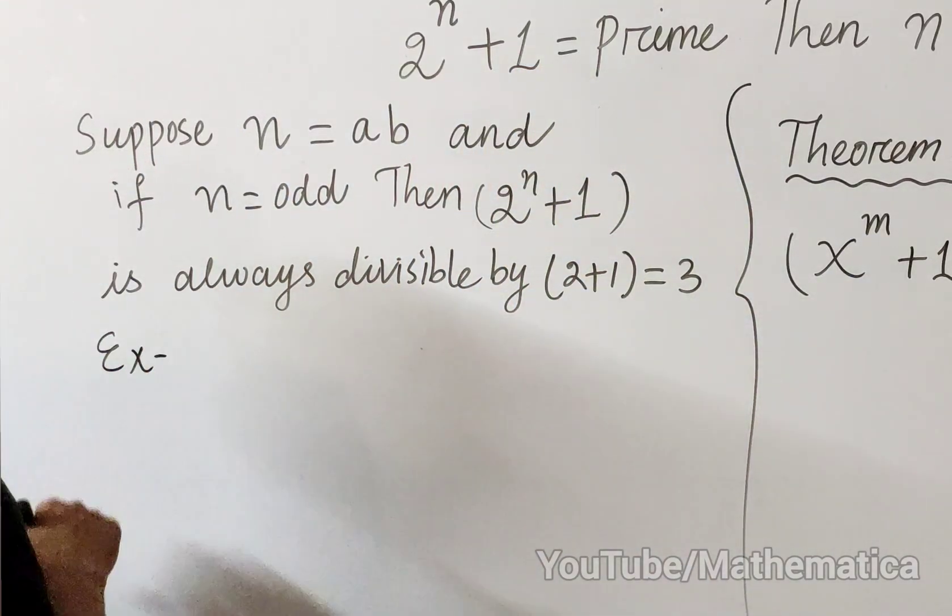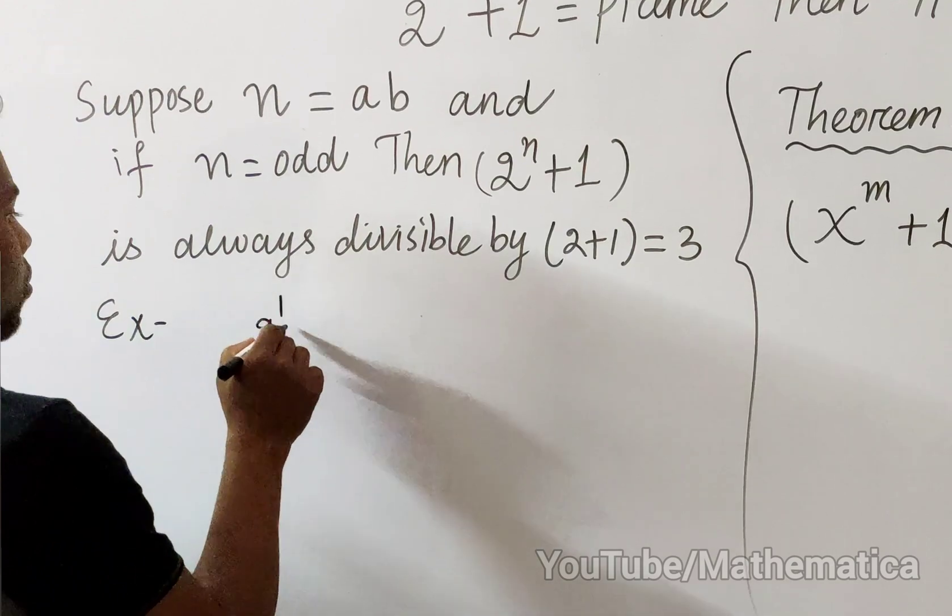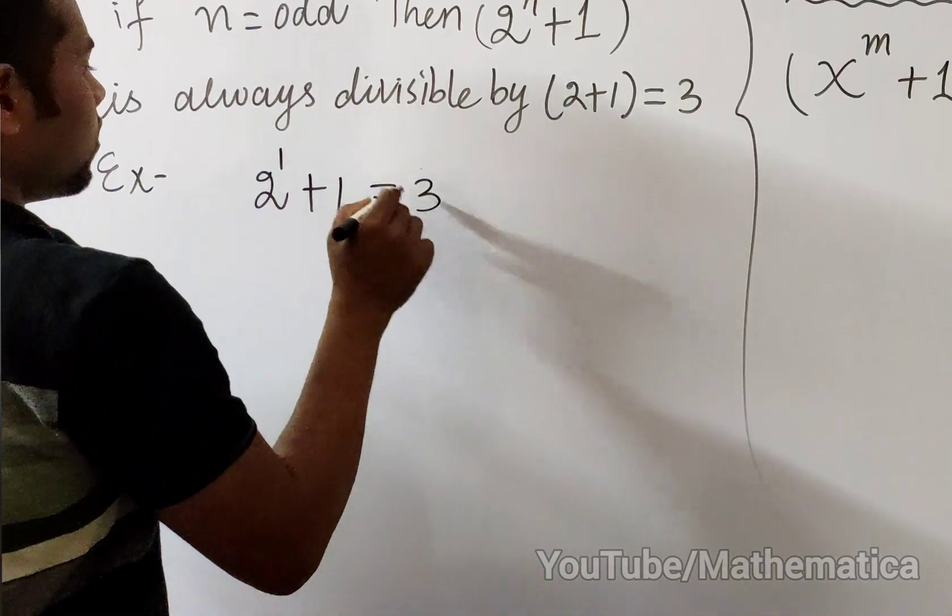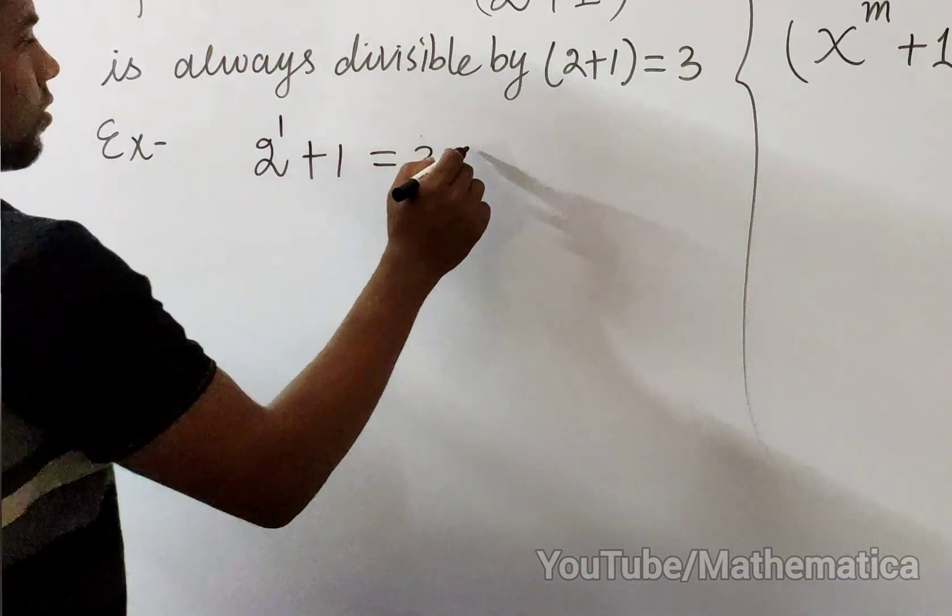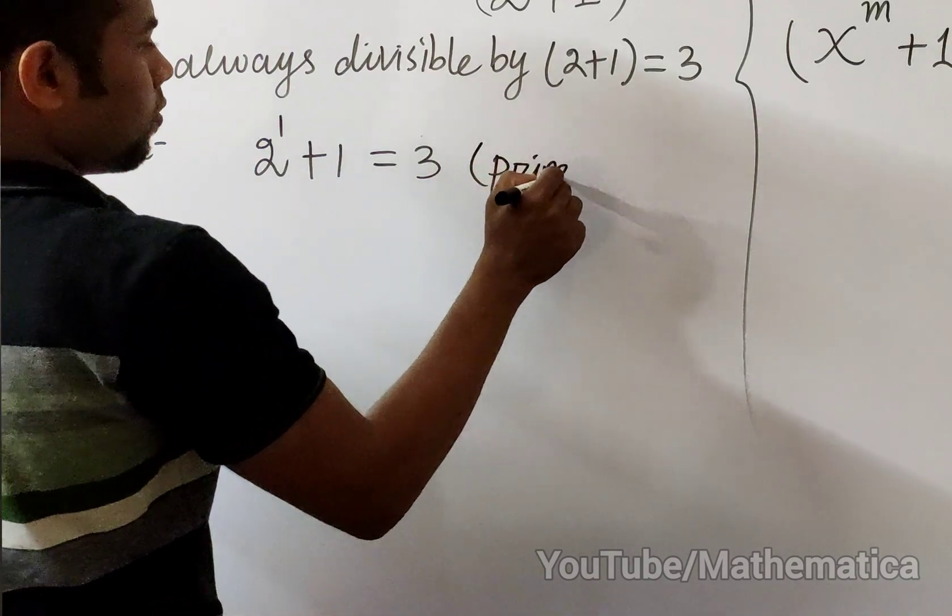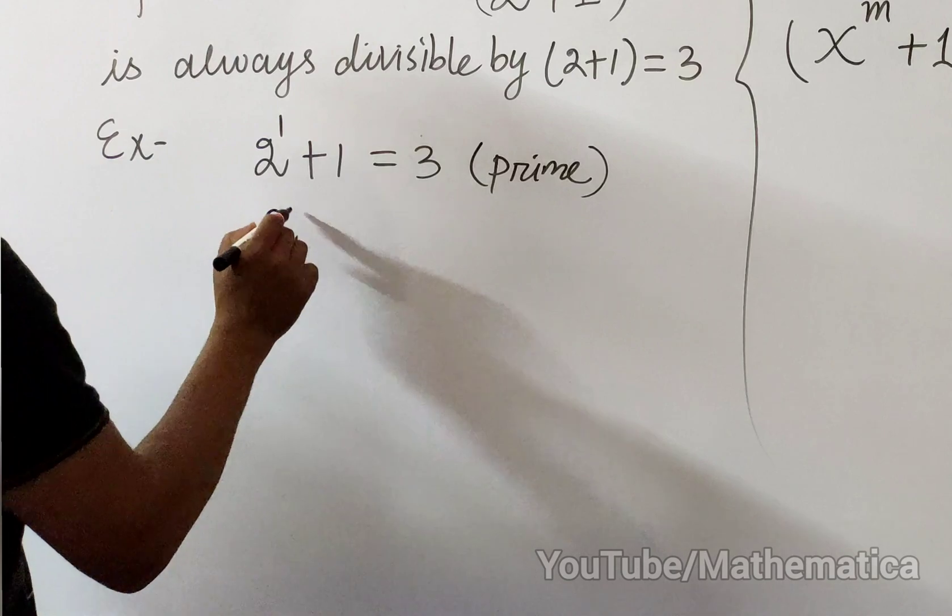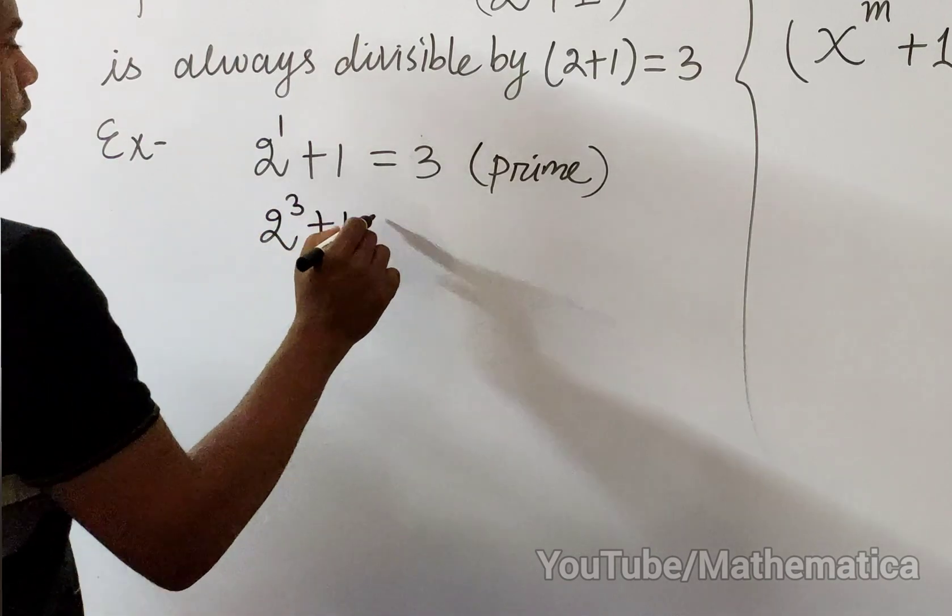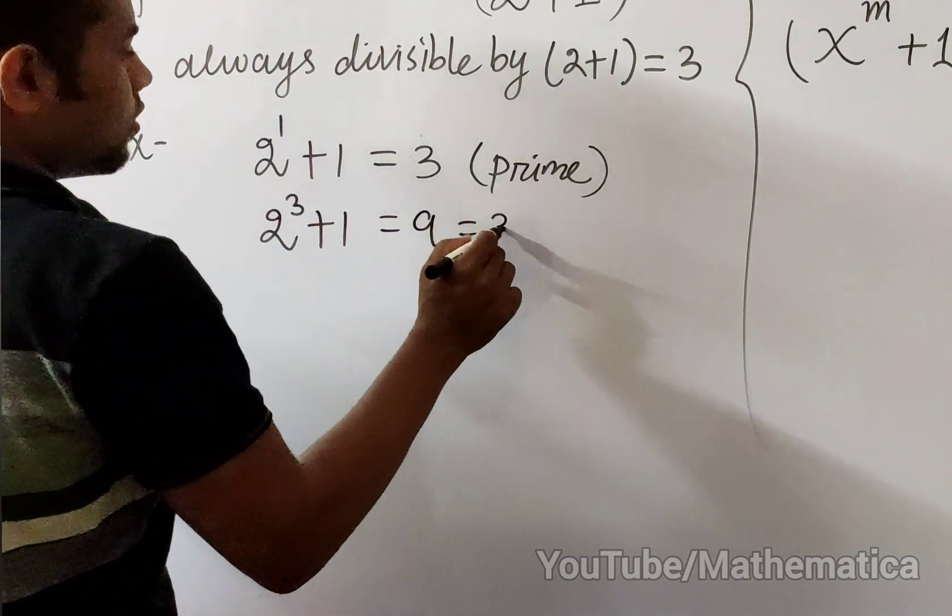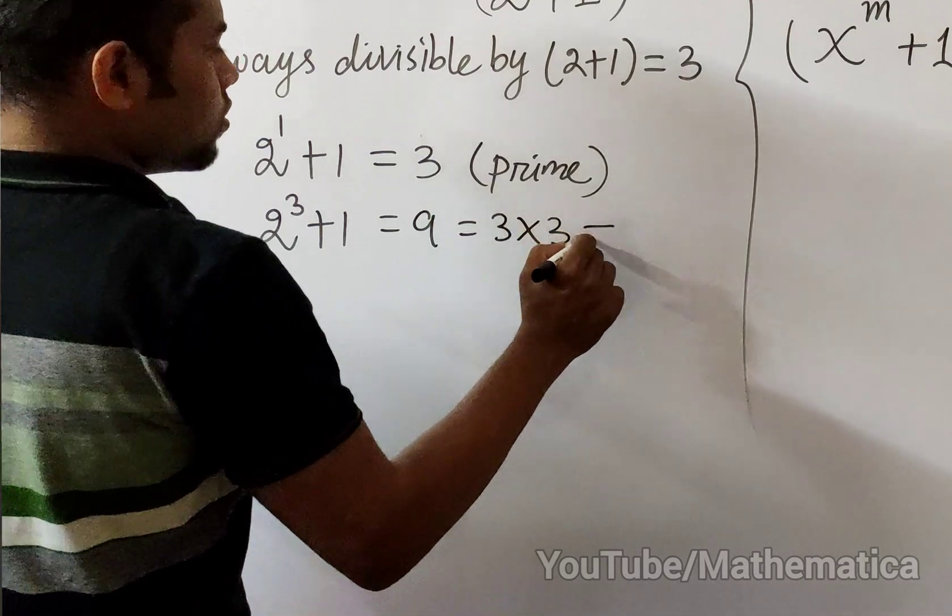For example, 2^1 + 1 is 3. This one is trivial, which is prime. Now 2^3 + 1 is 9 and this equals 3 into 3, which is not prime.